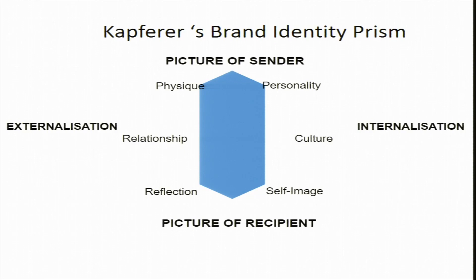On the other side of the prism you have the picture of a recipient. The recipient is the consumer. So, picture of the sender is identity and picture of the recipient is brand image. On the horizontal side, you see on the left-hand side you have externalization and on the right-hand side you have internalization.